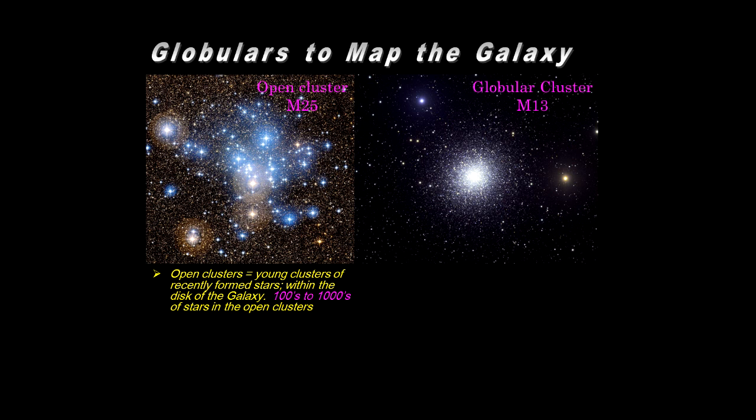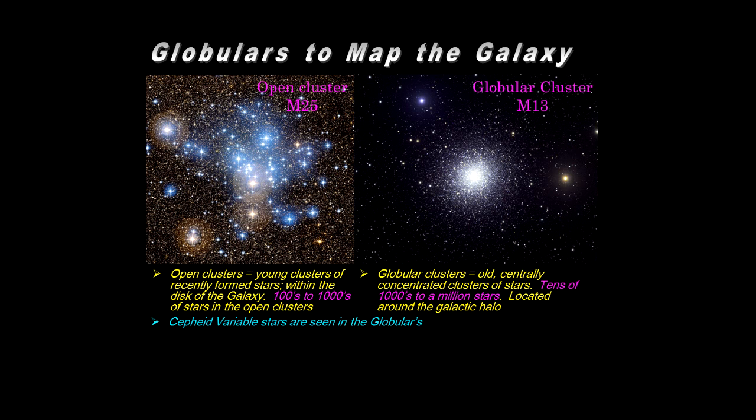Then the globulars, they consist of many more members. They are old stars, and they're concentric, basically. It tends to be spherical, and they're concentrated toward the center regions. Tens of thousands to even over a million stars in the globular clusters, and they're located around the galactic halo, which we'll discuss shortly also.